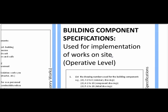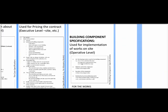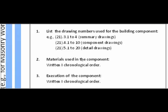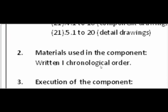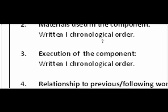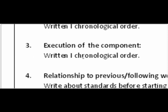Each building component specification is designed for one specific team of workers who actually do the work on site. Think of it as a kind of recipe. It consists first of a list of drawing numbers relating to that particular work — for example, if you're building a brick wall, which drawings relate to it — and then what materials relate to that item, mentioned in chronological order so you don't forget them.